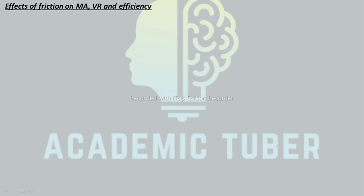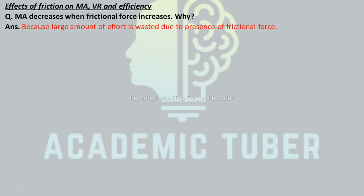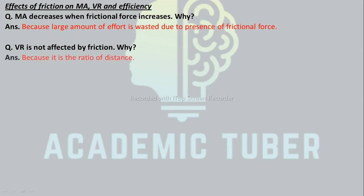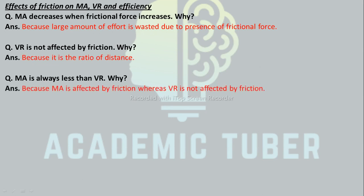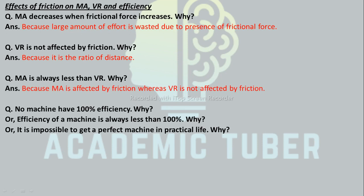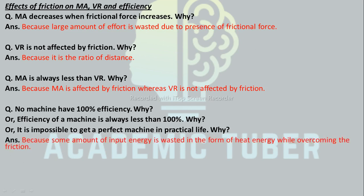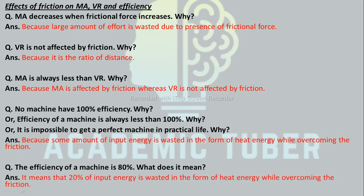Effects of friction on MA, VR, and efficiency. MA decreases when frictional force increases, because a large amount of effort is wasted due to friction. VR is not affected by friction, because it is the ratio of distances. MA is always less than VR because MA is affected by friction whereas VR is not. No machine has 100% efficiency because some input energy is wasted as heat energy while overcoming friction. If the efficiency of a machine is 80%, it means 20% of input energy is wasted as heat energy while overcoming friction.